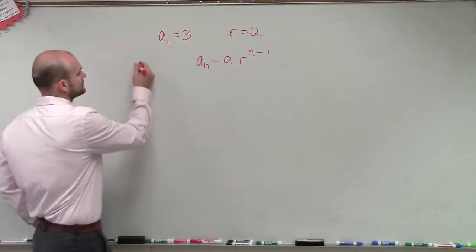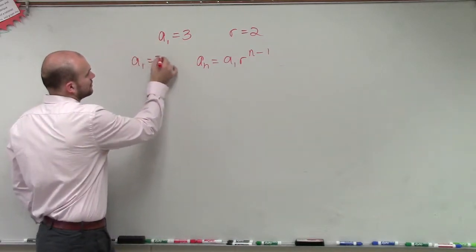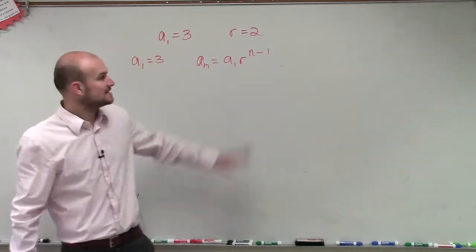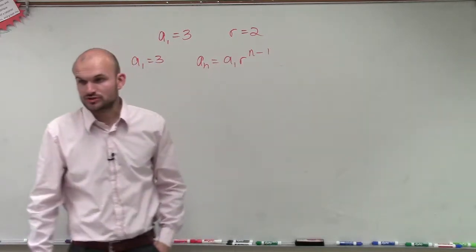They give us what a_1 is. a_1 equals 3, and the ratio equals 2.